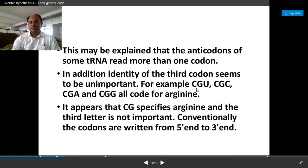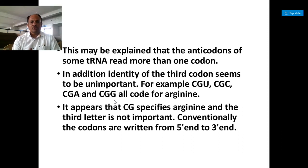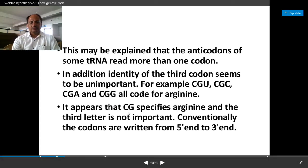For example, these are the codons: CGU, then CGC, then CGA, and CGG. All of these four codons specify or call for the amino acid arginine. It is observed that CG — that is the first two nucleotides of these four codons — specifies arginine. And the third letter: in the first codon the third letter is U, in the second codon it is C, in the third codon it is A, and in the fourth codon it is G. So this third letter is not important.